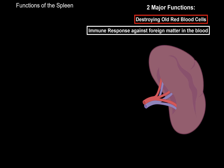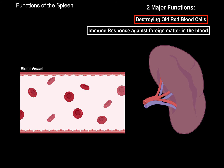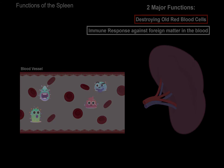The other thing the spleen does is mount an immune response against foreign matter in the blood. There's always a chance you'll have pathogens in the blood — called bacteremia if the pathogen is bacteria. If pathogens or foreign matter of any kind are in the blood, that material will eventually make its way into the spleen, and the spleen will mount an immune response against it. This is very similar to the lymph node, which also activates an immune response, but through lymph, not blood.